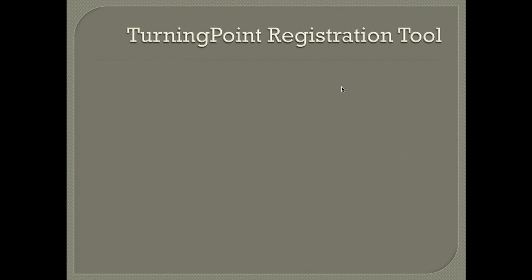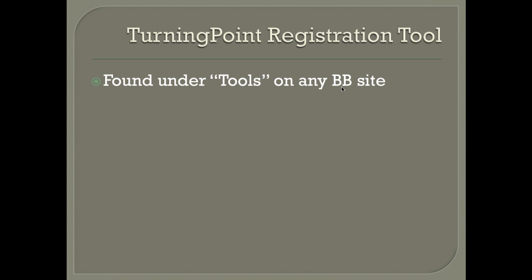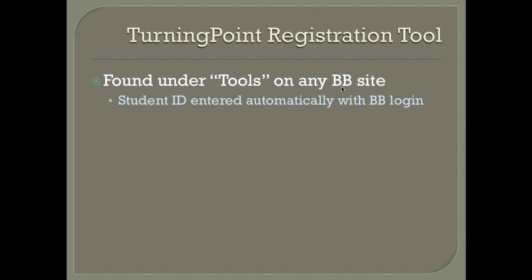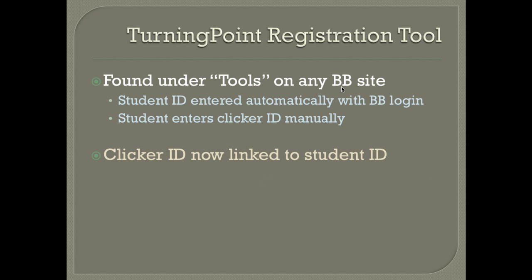The registration tool will be found under Tools on any Blackboard site, providing it has been made available. The student ID is automatically entered when he or she logs into Blackboard. The student then enters the clicker ID manually, and now the clicker ID is linked to the student ID.